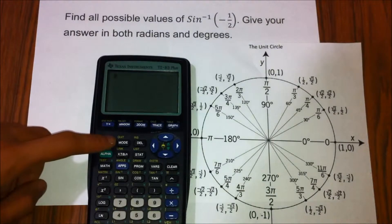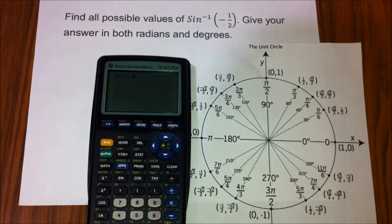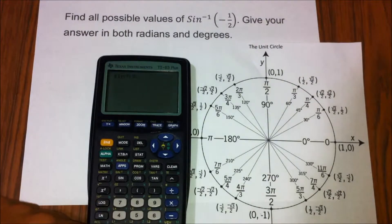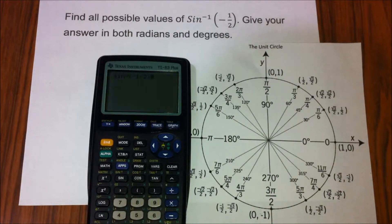then press second before pressing the button sine, since the blue highlighted option of inverse sine is there. Then input negative 1 half, close parenthesis, because if you don't put a parenthesis at the end, the result will not be the one that we are expecting it to be.